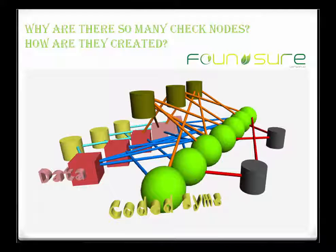As seen from the 2D representation, we have 3 types of check nodes. Two main questions that come to mind are: why are there so many check nodes, and how are they created? Let me start with the first.